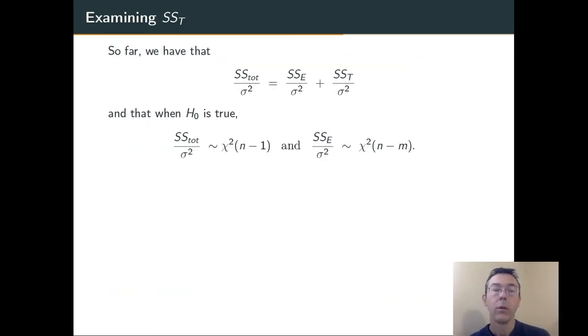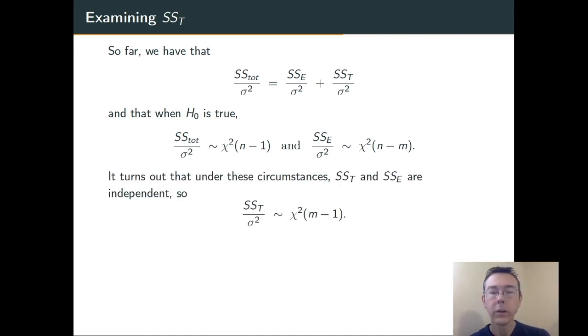Let's get back to the big picture. We have this equation, total sum of squares equal error sum of squares plus treatment sum of squares. Dividing everything by the population variance, we get to a situation where, when the null hypothesis is true, two of the three things are known to have chi-squared distributions. And it turns out that under those circumstances, the third one does as well. The treatment sum of squares over the population variance will be chi-squared with m minus 1 degrees of freedom. If the null hypothesis is true, we're getting a ratio of chi-squared random variables. It's going to have an F-distribution that we can compute in.